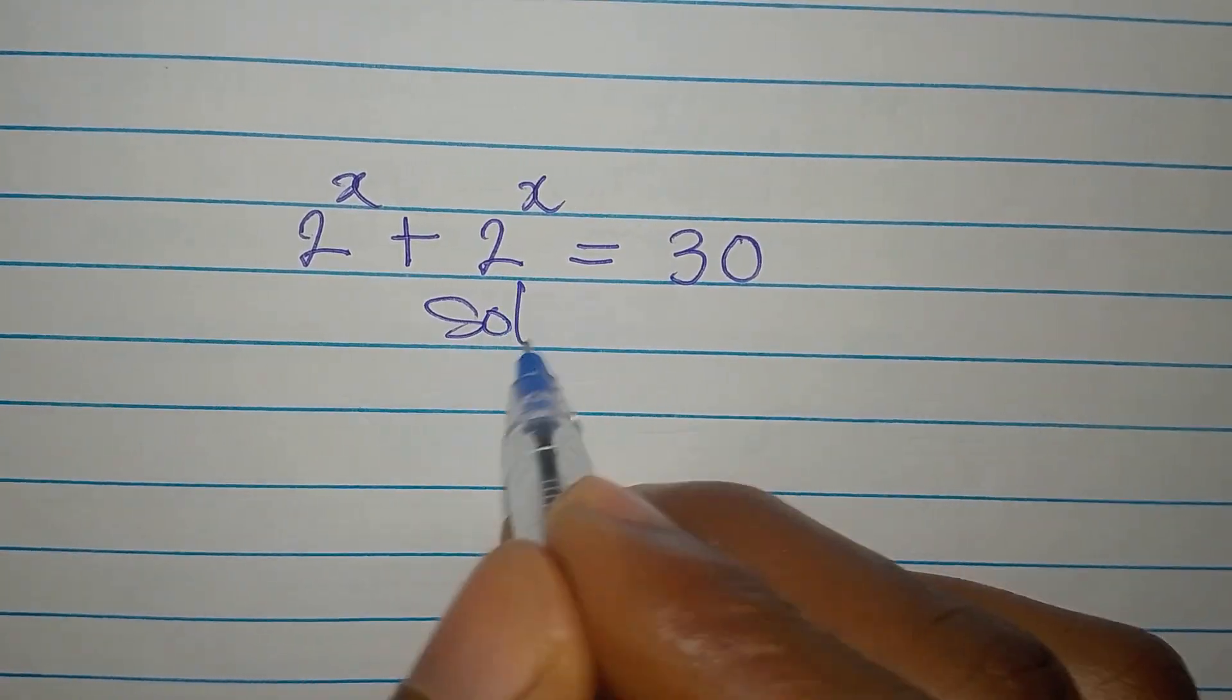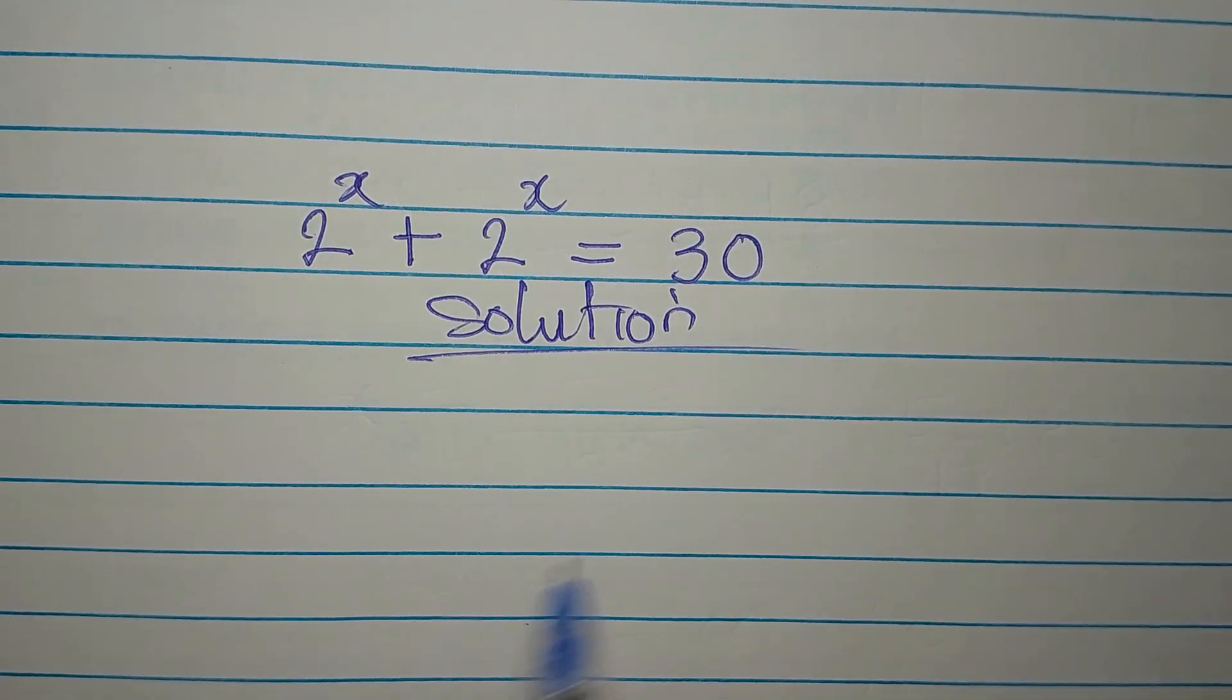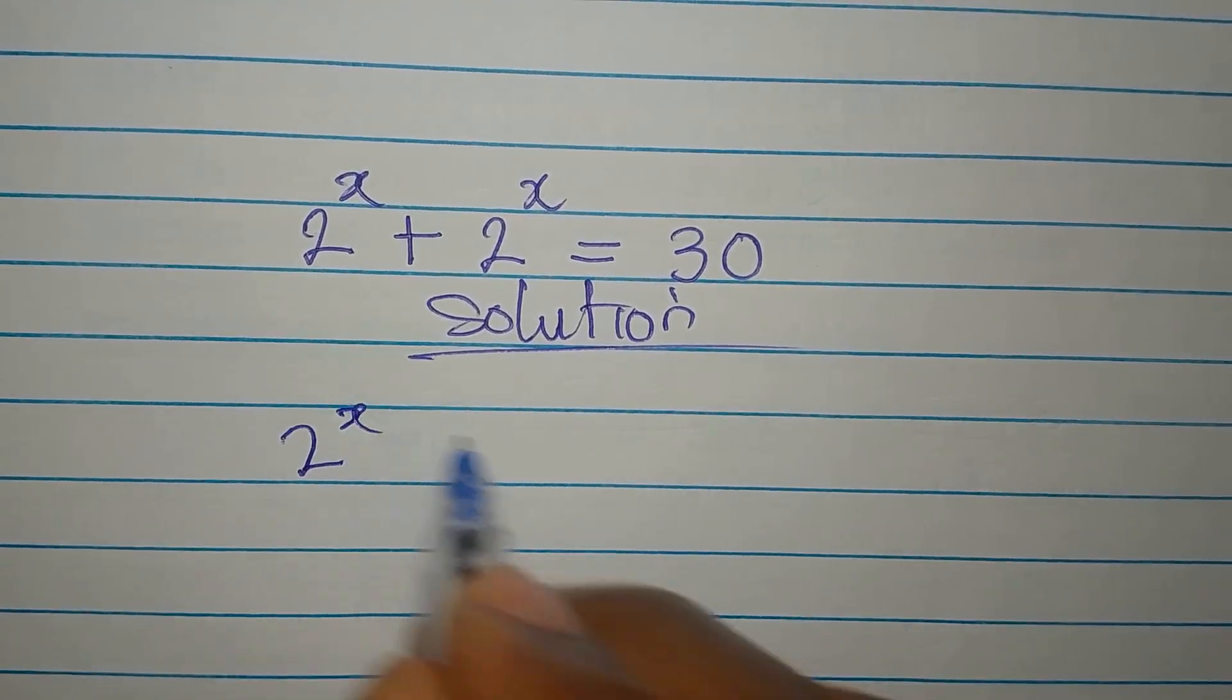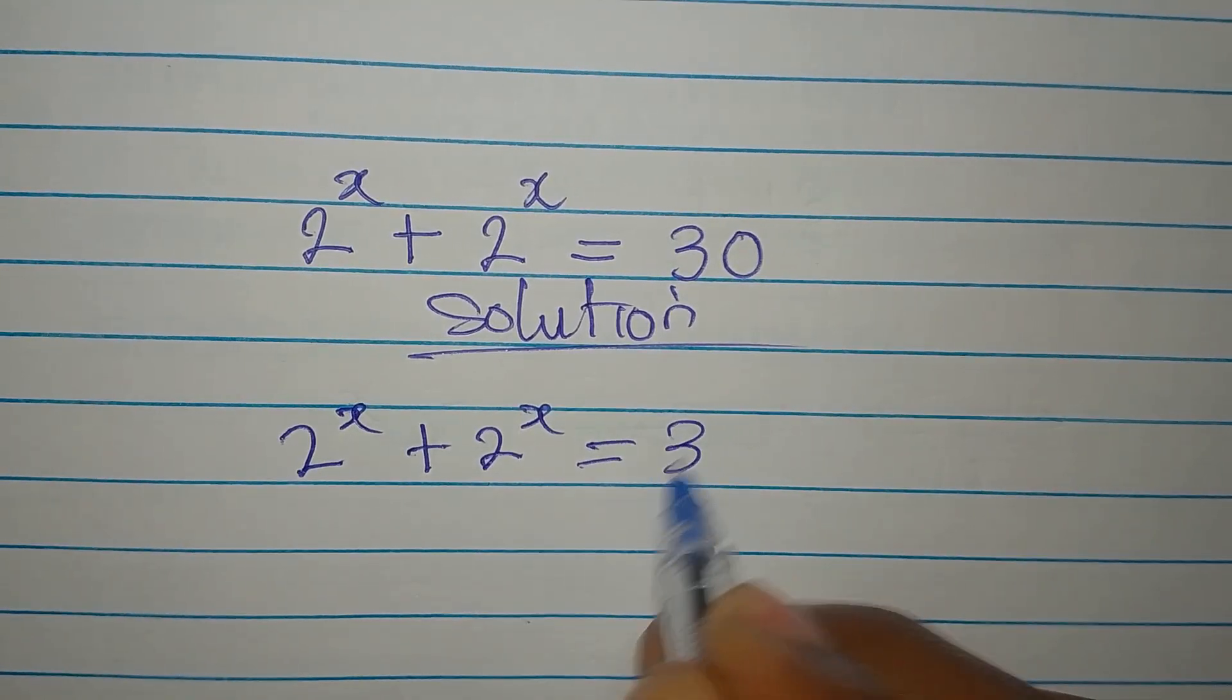Hi, let's provide the solution to this problem right away. 2 to the power of x plus 2 to the power of x equals 30.